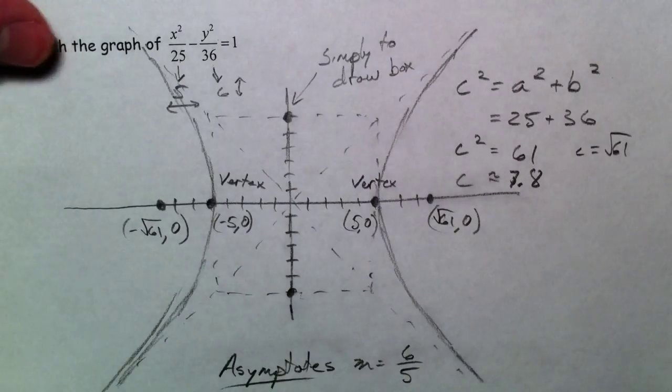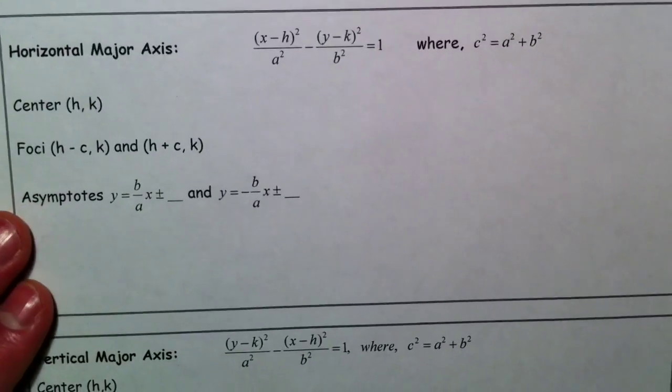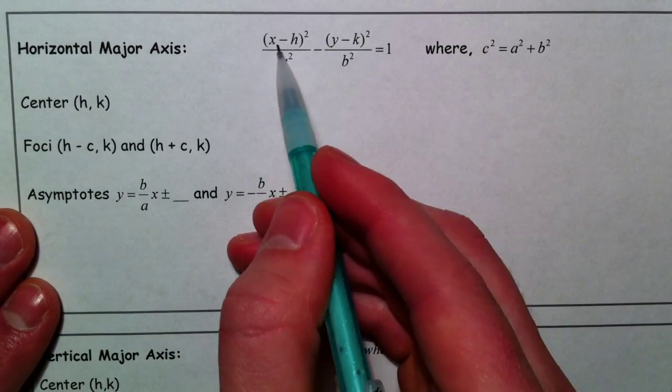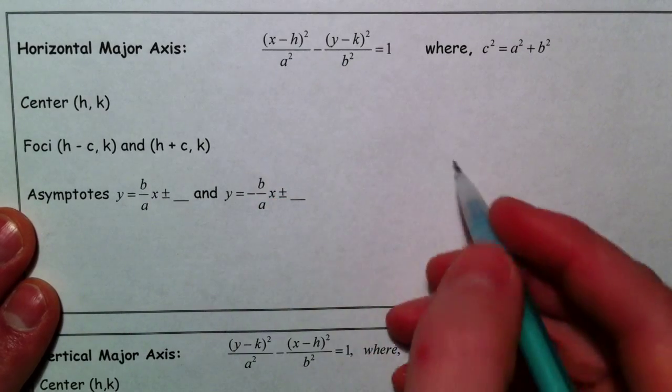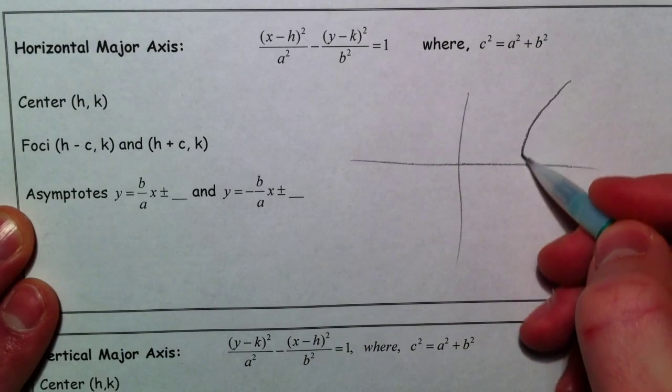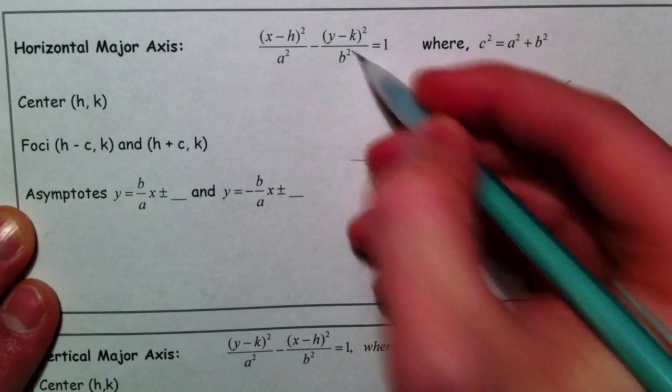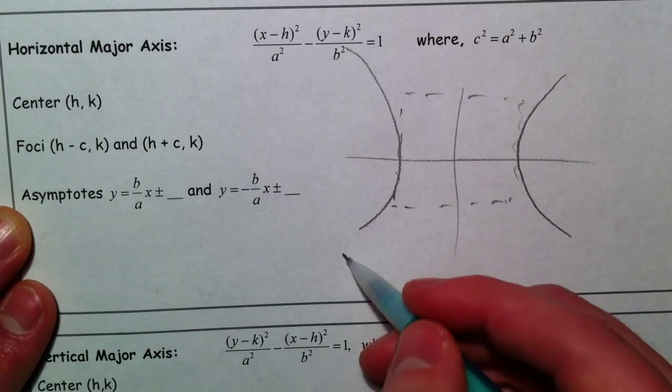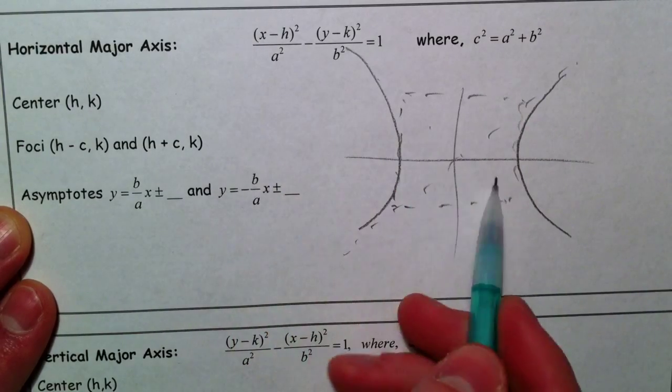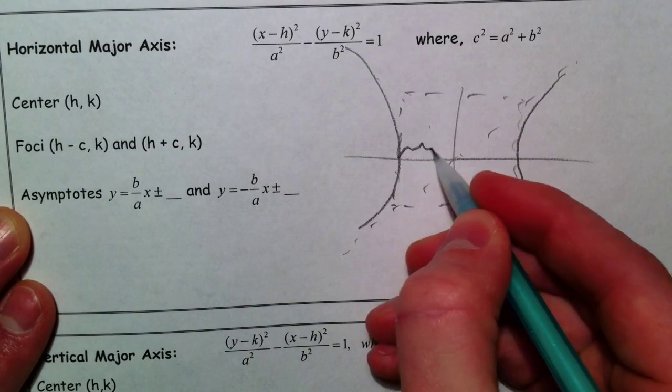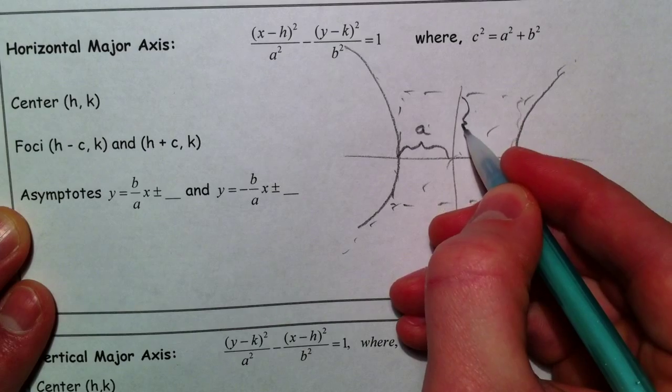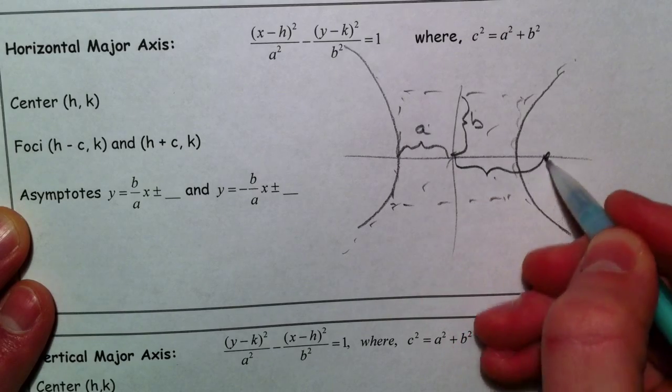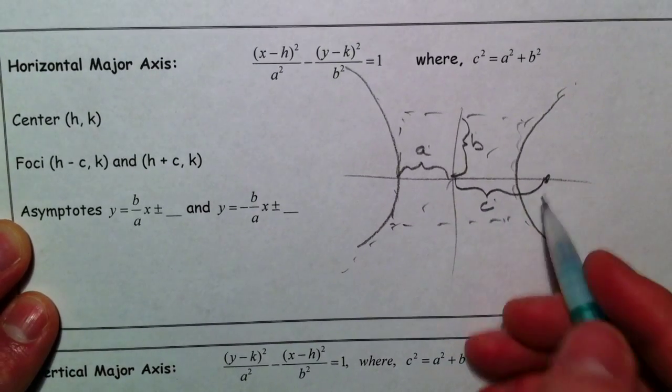Now, hyperbolas can open up two different ways, depending on how the equation goes. And so this is a more complicated equation because it's got the h and k in it. But notice if the x squared is first, it's going to be like this. And we're going to make our box.